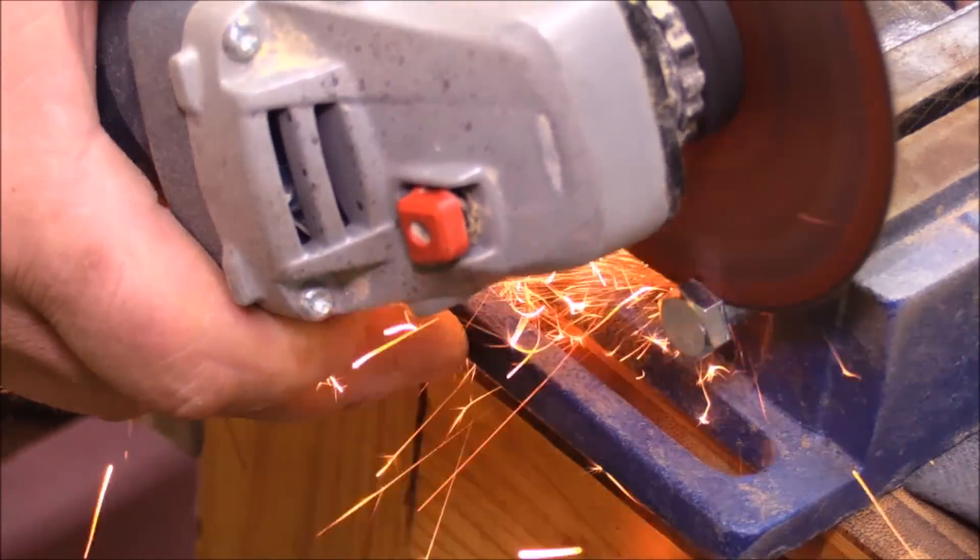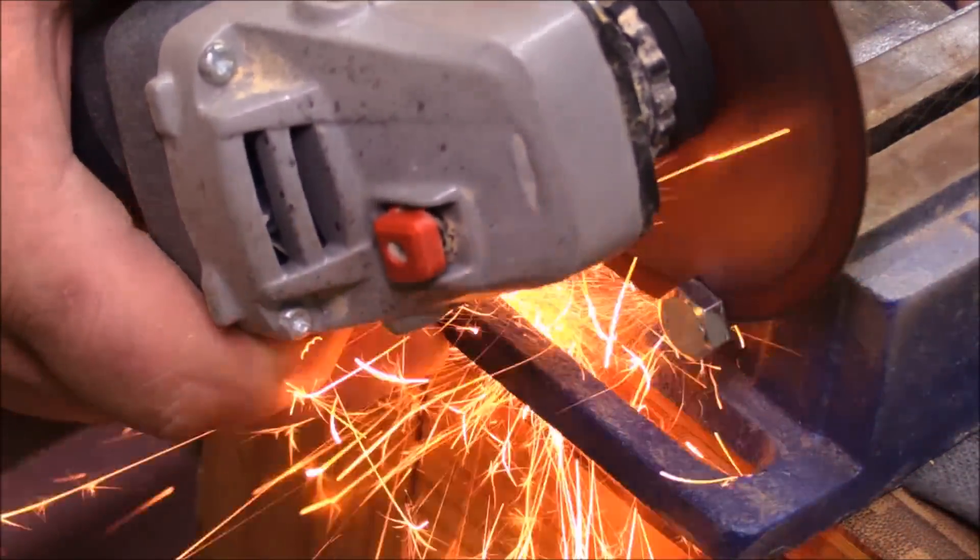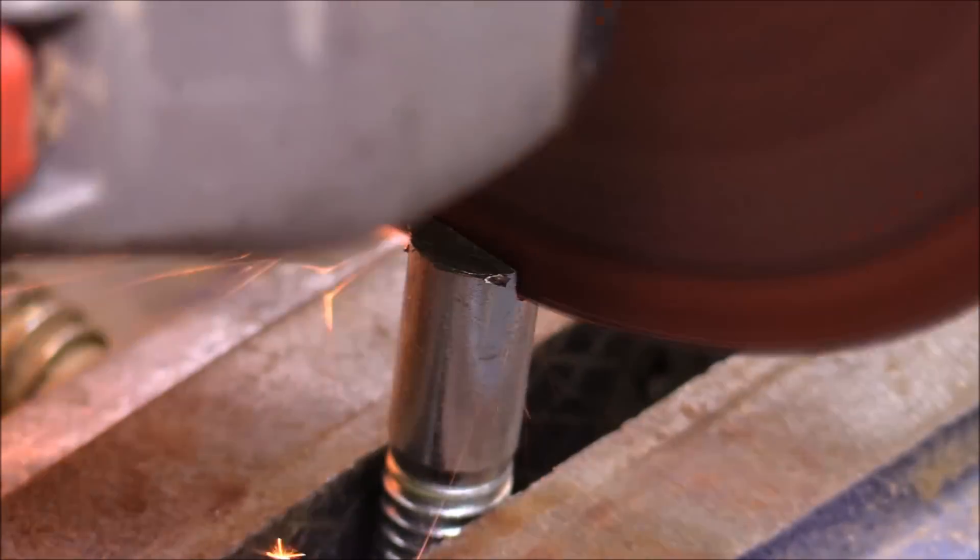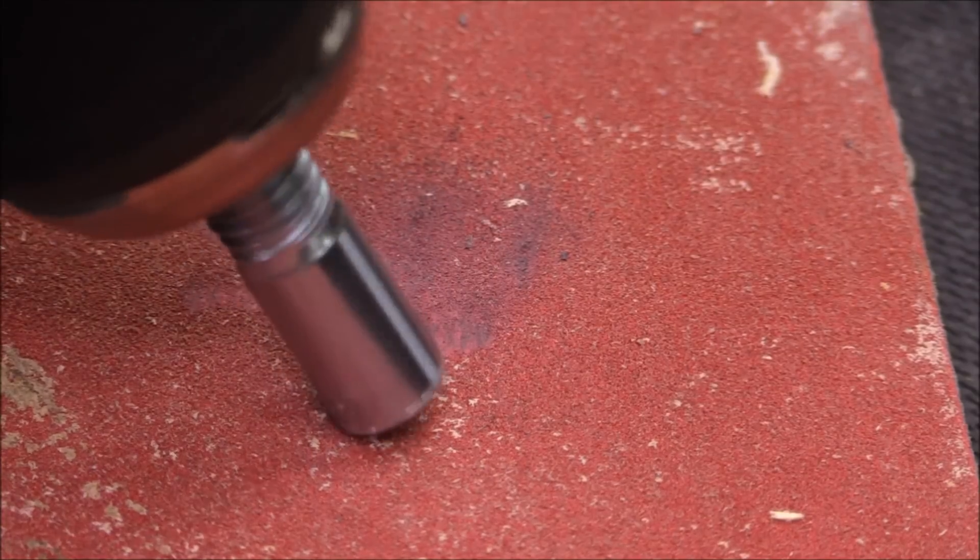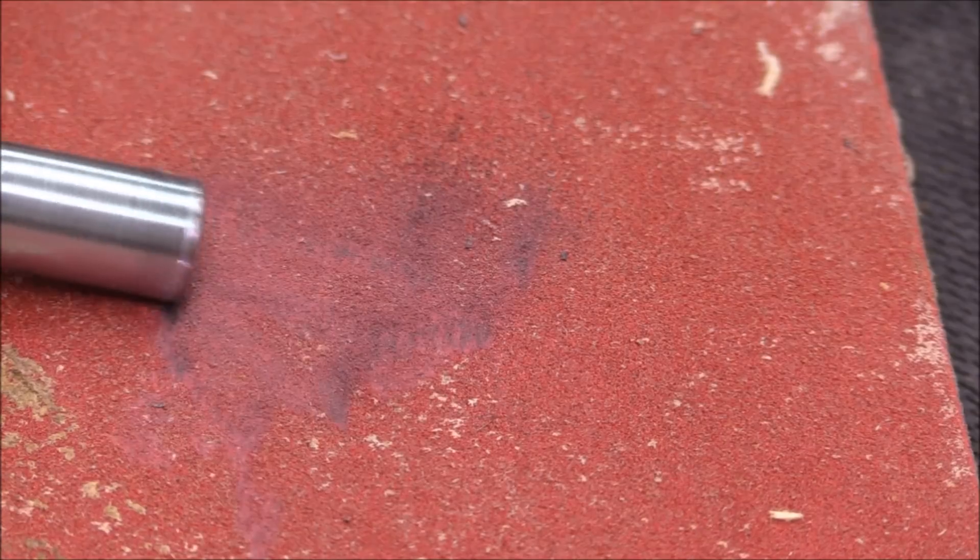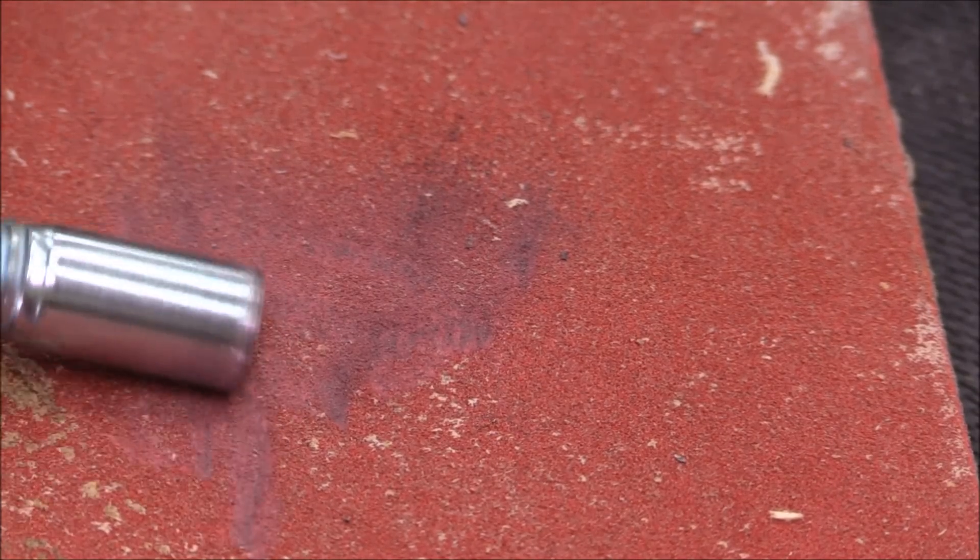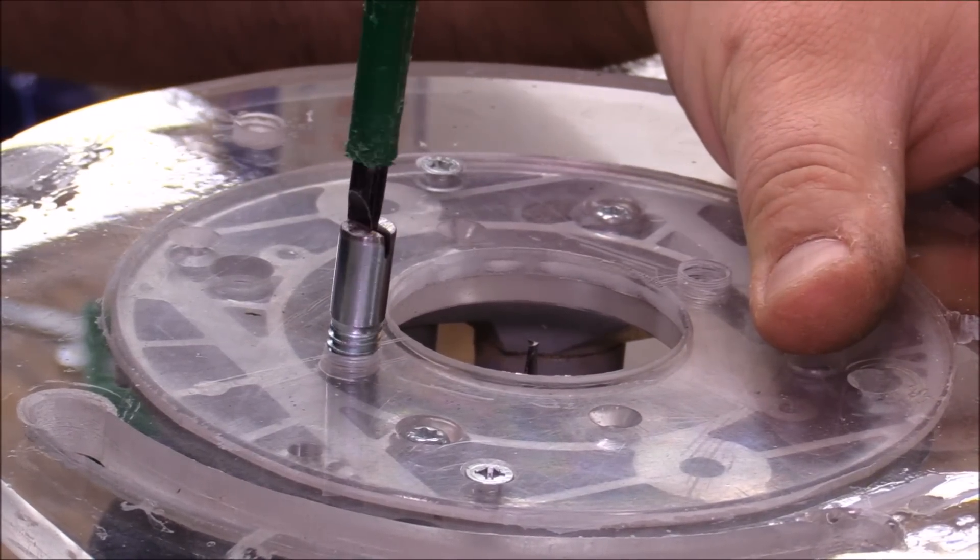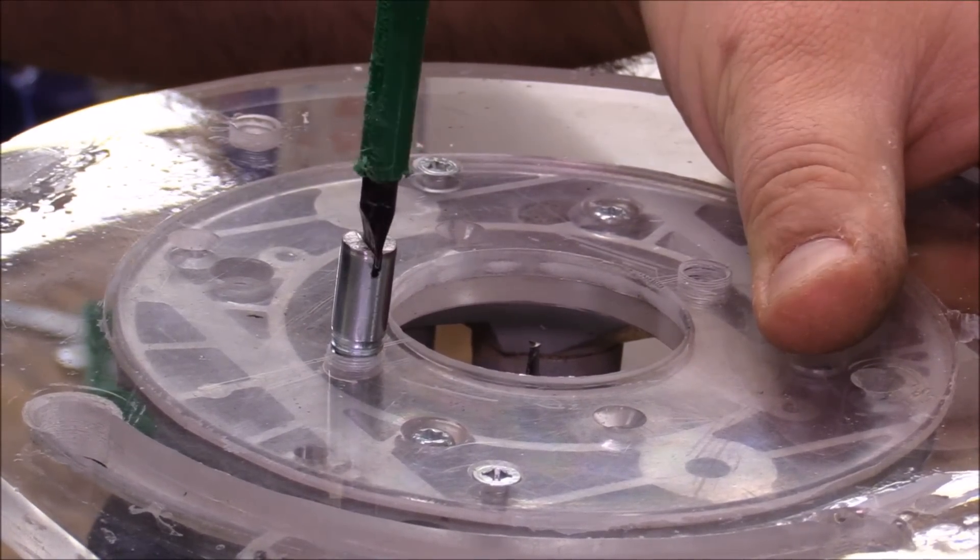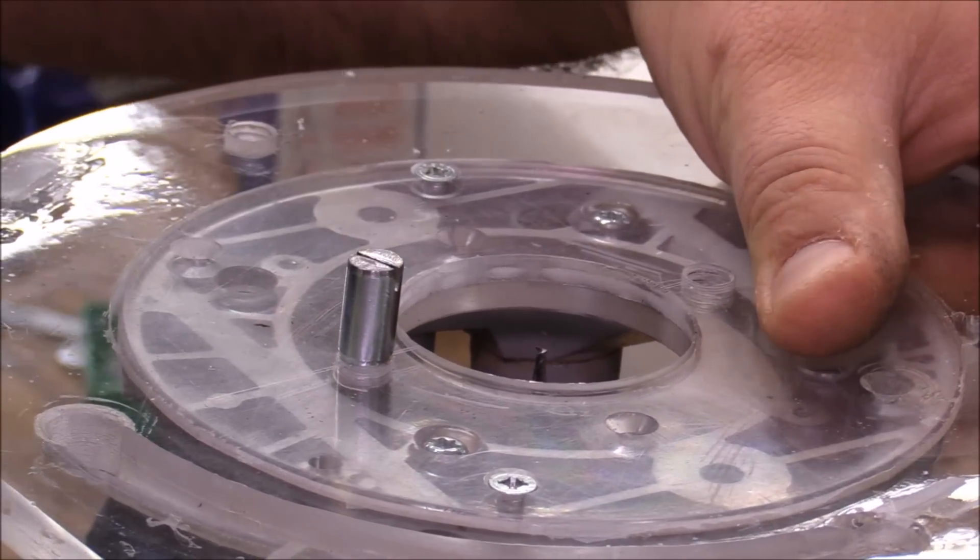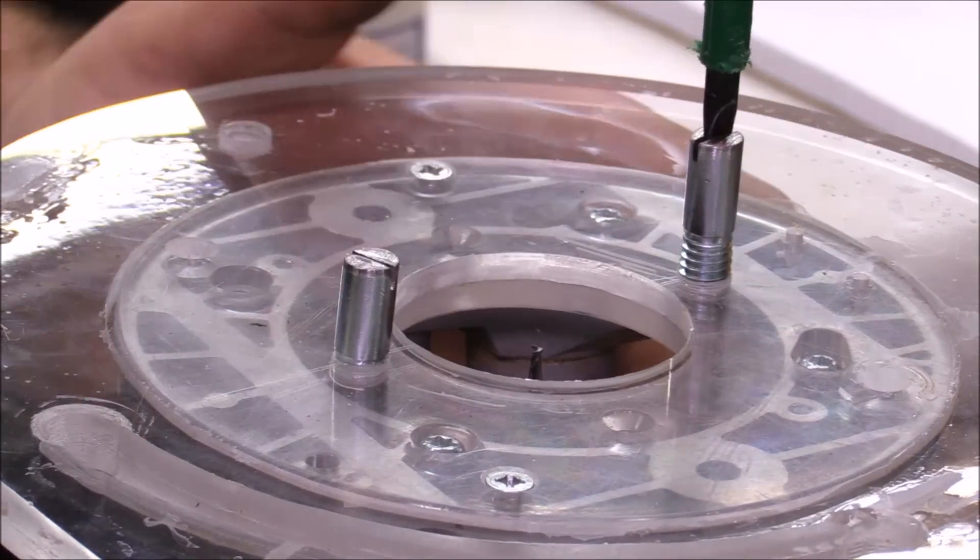I'm taking some short 3/8 bolts and I'm just cutting the head off of them and then I'm cutting a groove in the top of them. Then I'm going to come back and chuck them up in my drill and just clean up the part that I cut. I can screw those into the base plate with the 3/8 holes that are on either side of the drill bit.